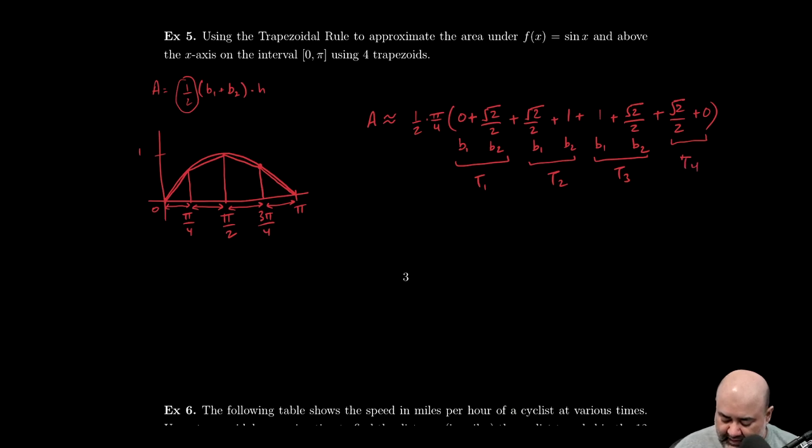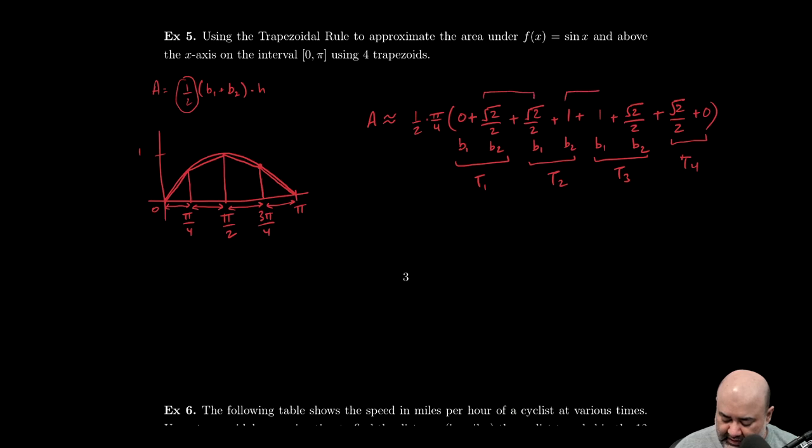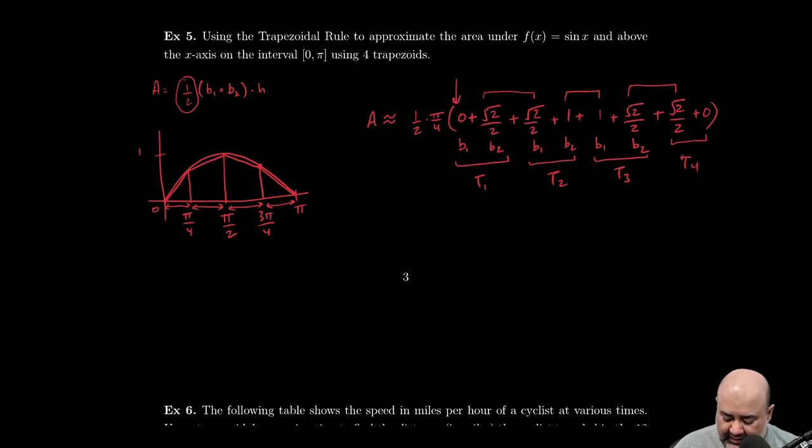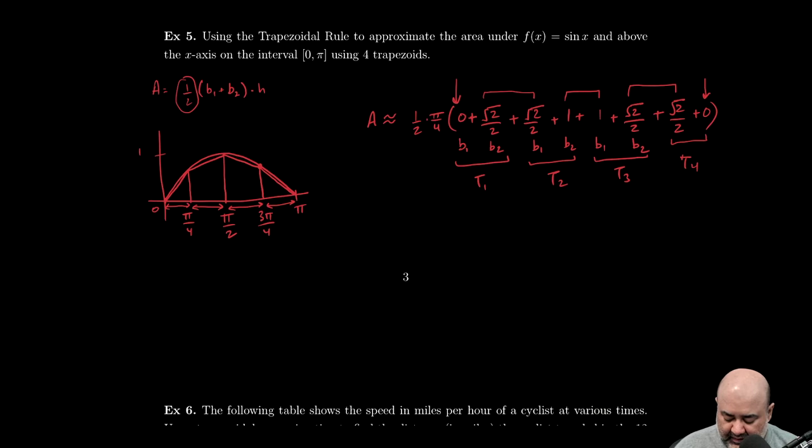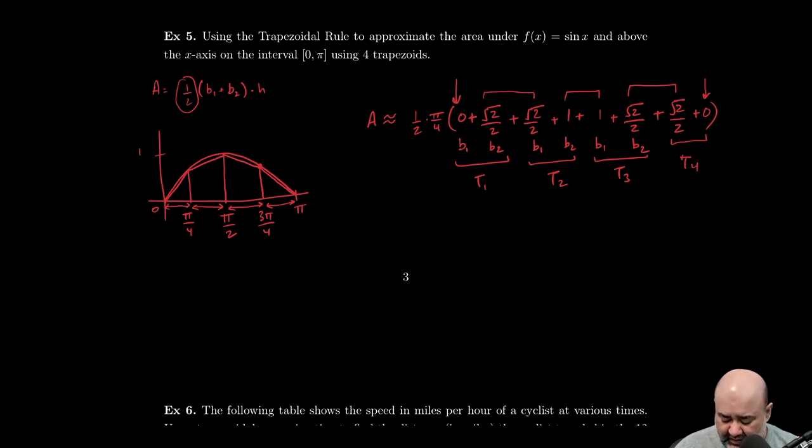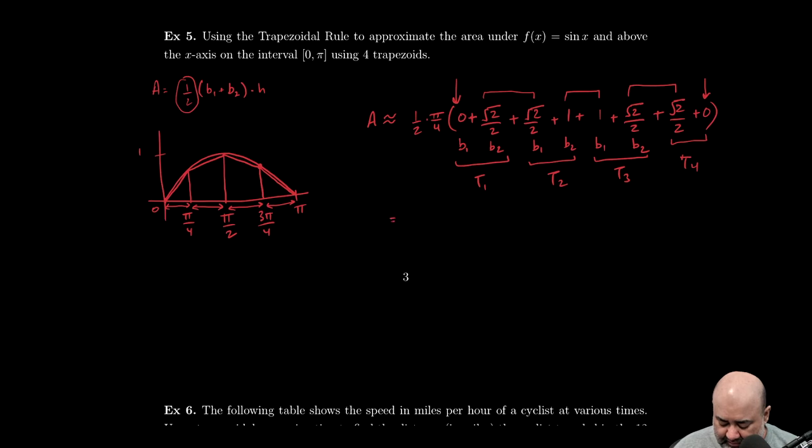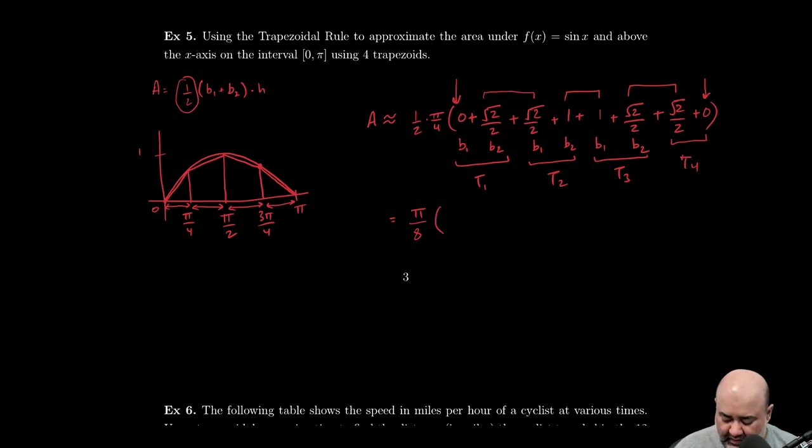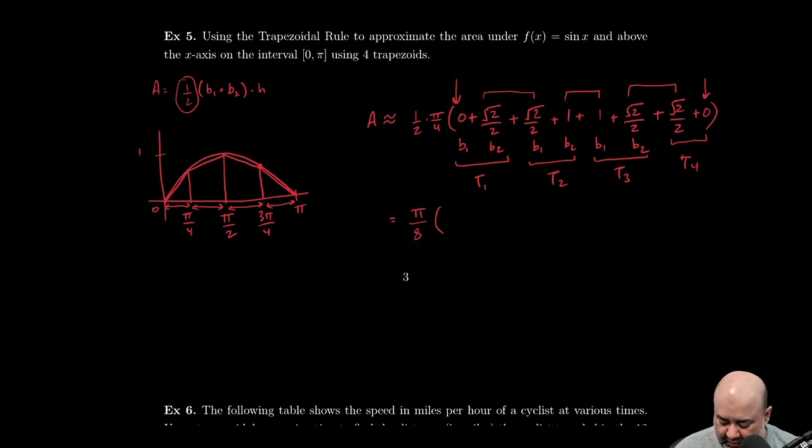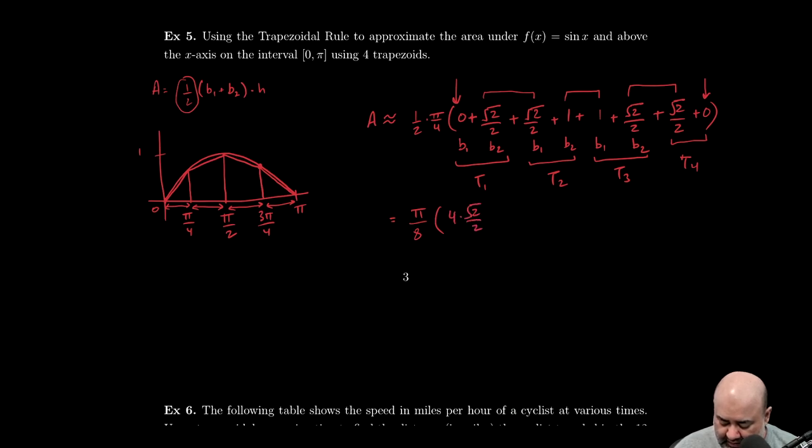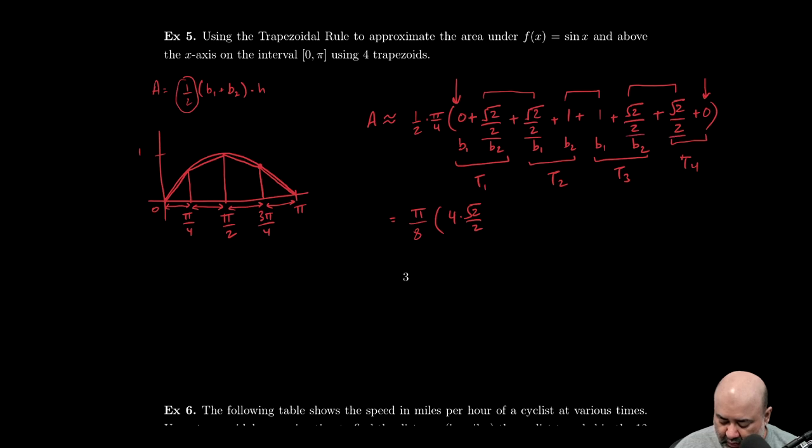Now, one thing I want you to observe is that this number is the same as this, this number is the same as this, this number is the same as this. So the inside values are doubled, the outside values are by themselves. Now, this is something that we can exploit as well. We can come up with a generalization, but to complete this problem, we have π/8 on the outside. Two times four on the bottom would become an eight. Zero plus the zero on the flanks are just gone away. Those are just zeros. Now we have four of these √2/2. I'm just going to write that as four times √2/2, because I have one, two, three, four. And then I have two singles by themselves, so I have plus two.